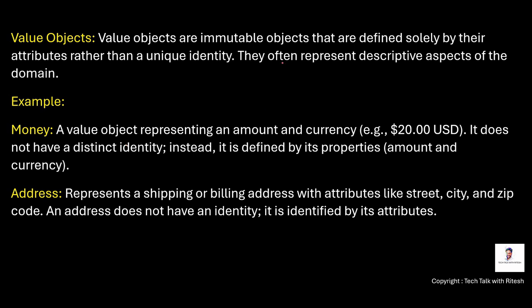The next key concept is value objects. Value objects are immutable objects defined solely by their attributes rather than a unique identity. They often represent descriptive aspects of the domain. For example, money is a value object representing an amount and currency — such as $20 — defined by its properties: amount and currency. Address is another value object representing a shipping or billing address with attributes like street, city, and zip code. An address is identified by its attributes, not by an identity.